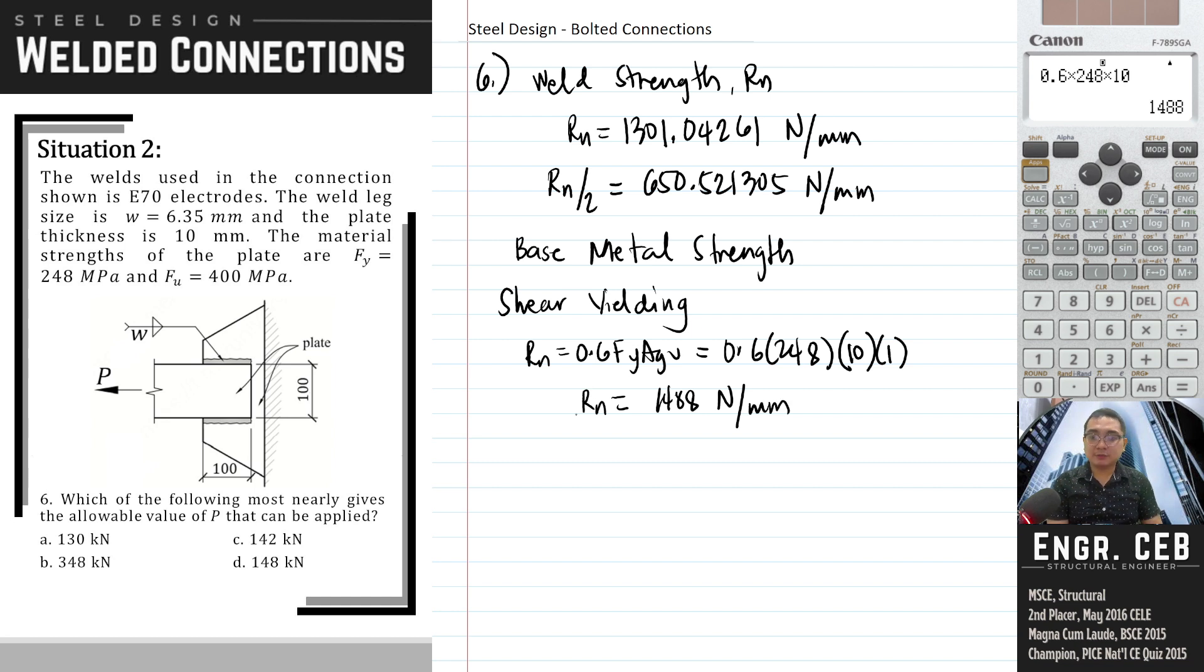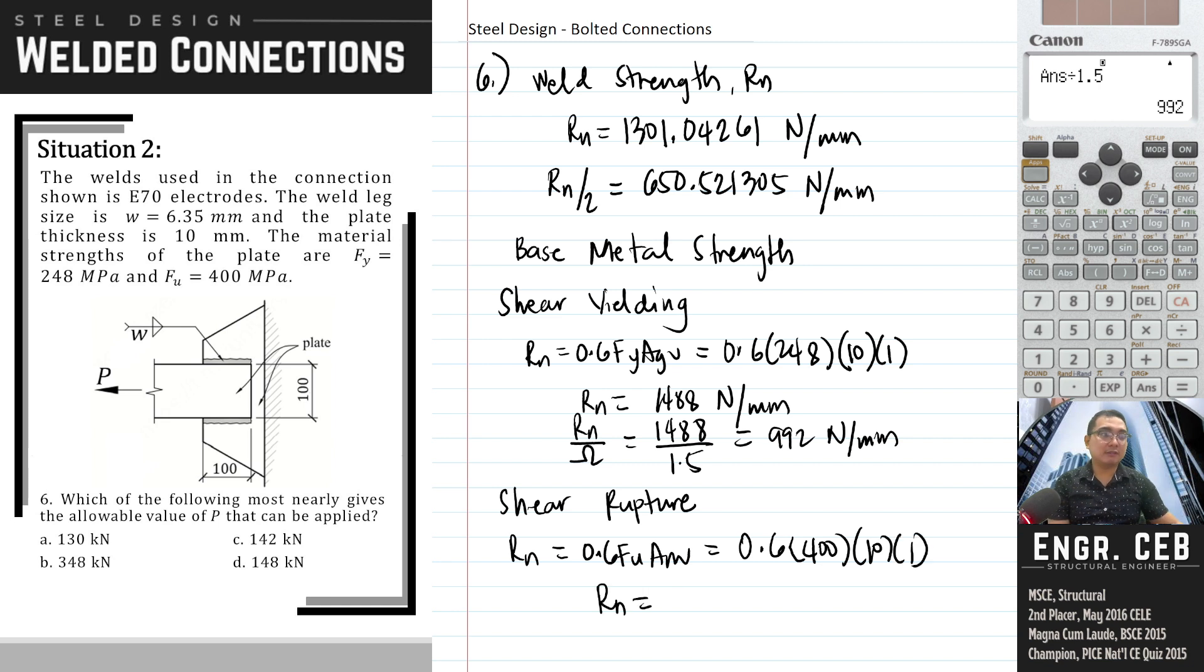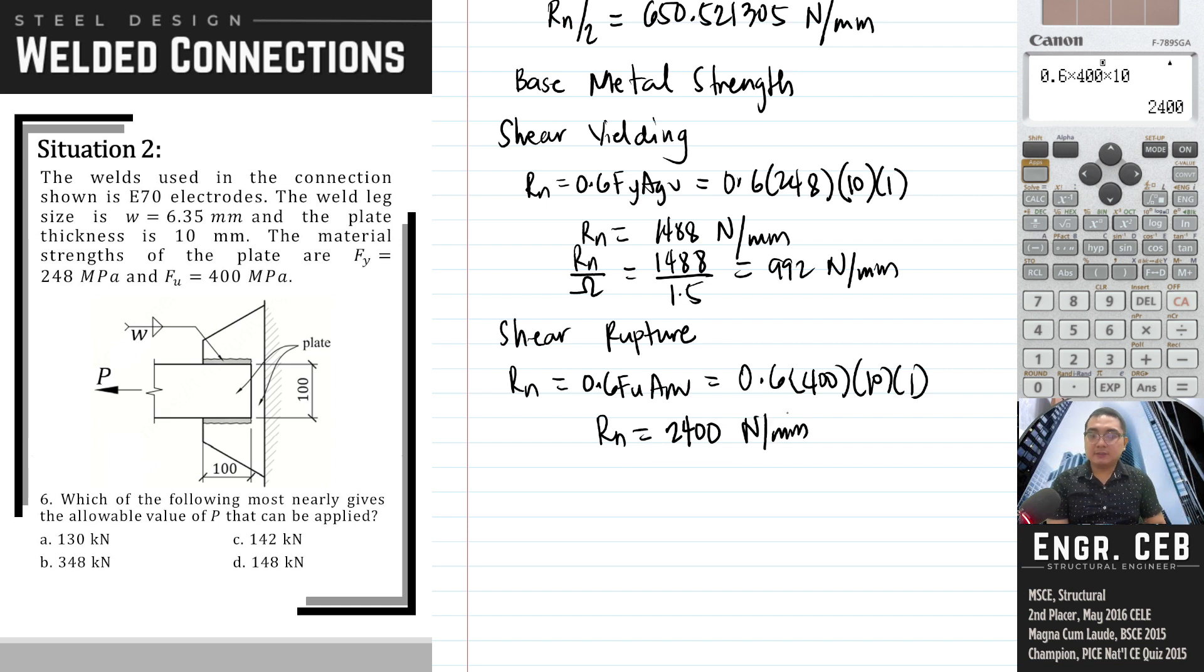And then divide this by the factor of safety for shear yielding, which is 1.5. This is 992 Newtons per millimeter. For shear rupture, R sub N is 0.6 FW ANV. So this becomes 0.6 times 400 times 10 times 1. So our RN based on shear rupture is 2,400 Newtons. Then divide by the factor of safety for shear rupture. So therefore, that is 1,200 Newtons per millimeter.